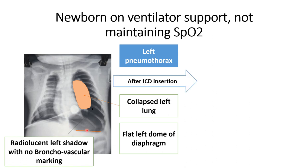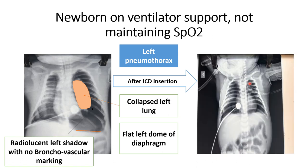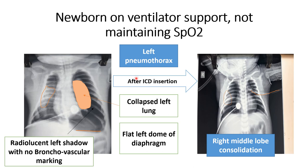After ICD insertion, you can see in this x-ray that the lung is inflated normally. This is the marking for the ICD. Now on the right side of the lung field you can see opacity is present, which is very clearly visible. So the patient was also having right middle lobe consolidation. The diagnosis for this patient is right middle lobe consolidation with left pneumothorax.